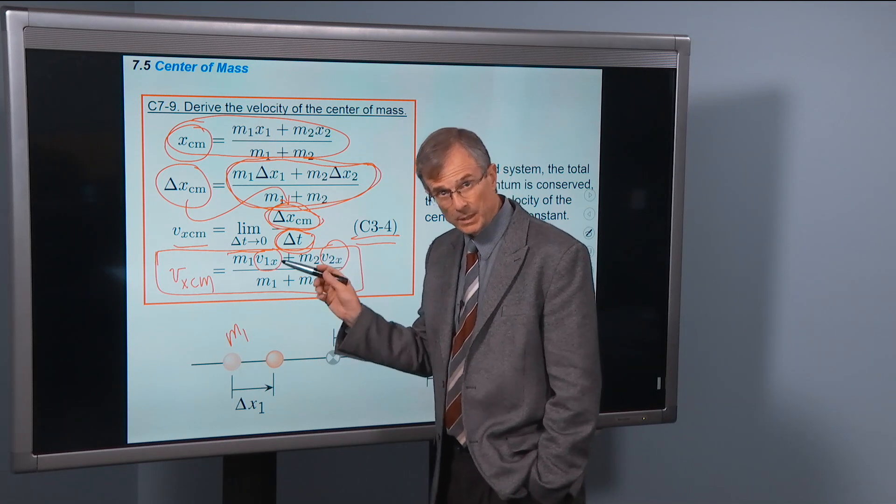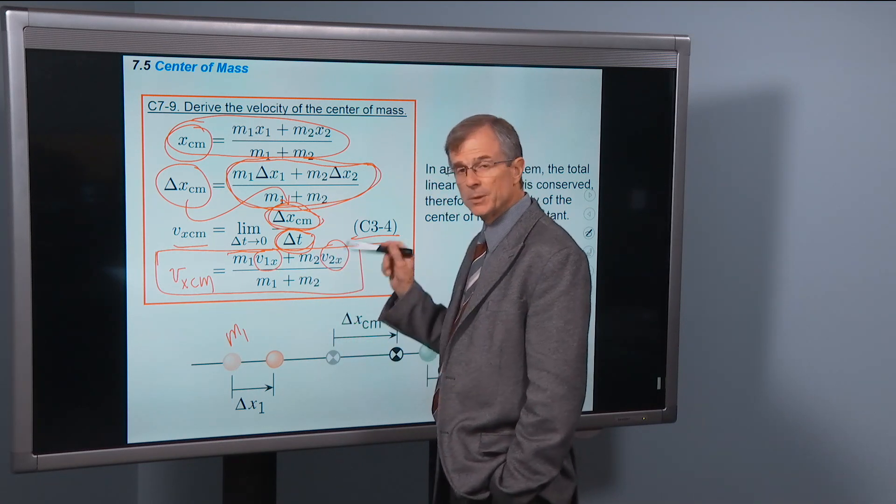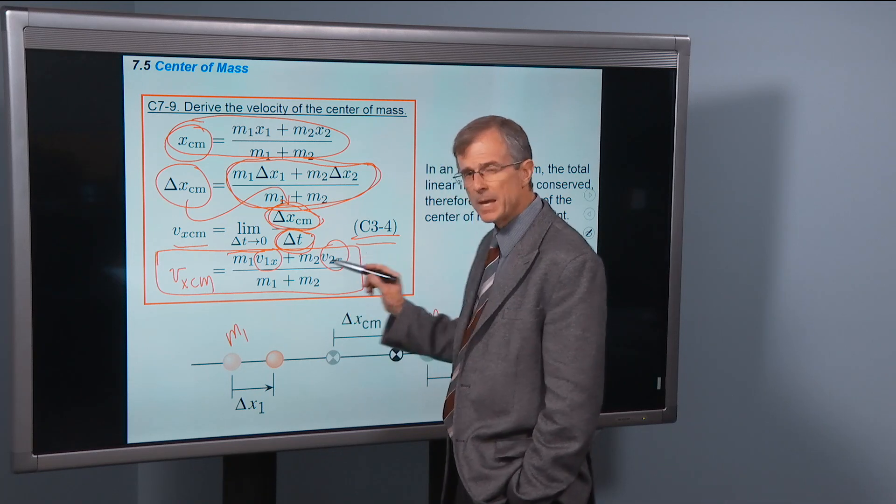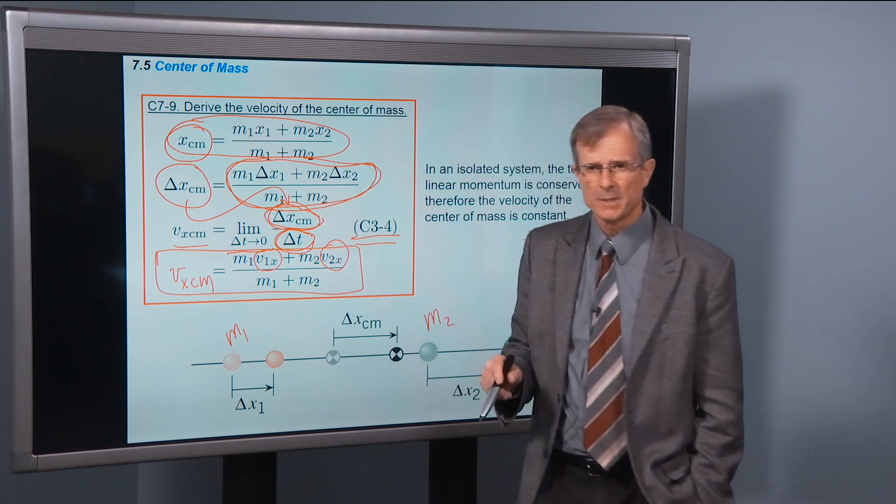Same thing here, except now we're talking about a velocity: m1 times v1x plus m2 times v2x divided by m1 plus m2. So these two equations have the same basic structure.